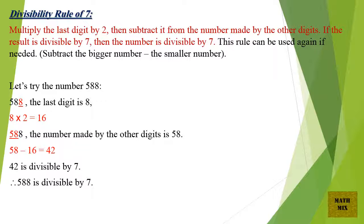Let's try the number 588. The last digit is 8. 8 times 2 equals 16. The number made by the other digits is 58. 58 minus 16 equals 42. 42 is divisible by 7. Therefore, 588 is divisible by 7.